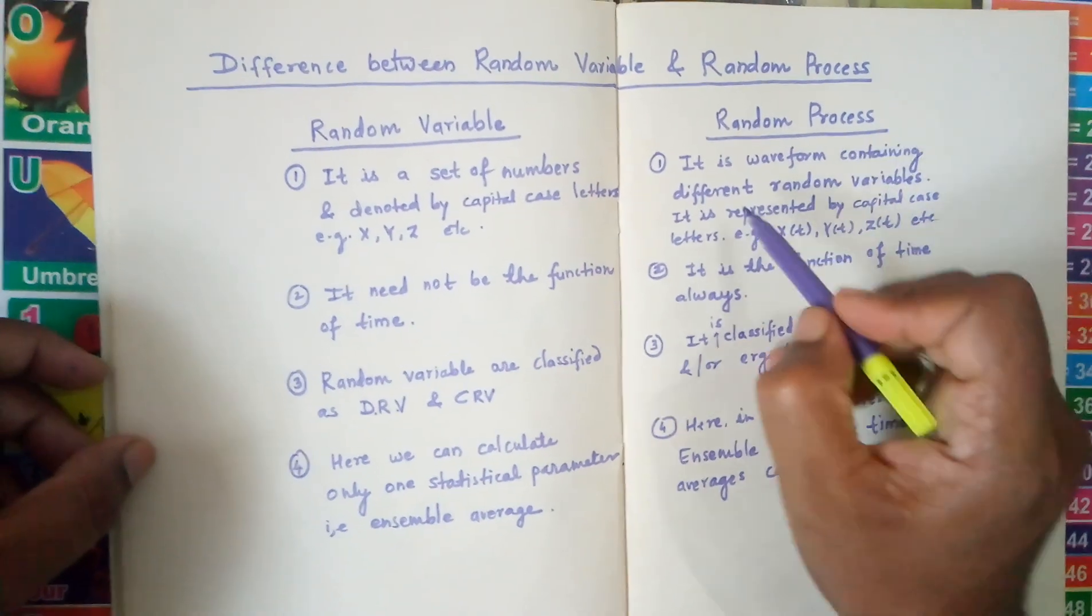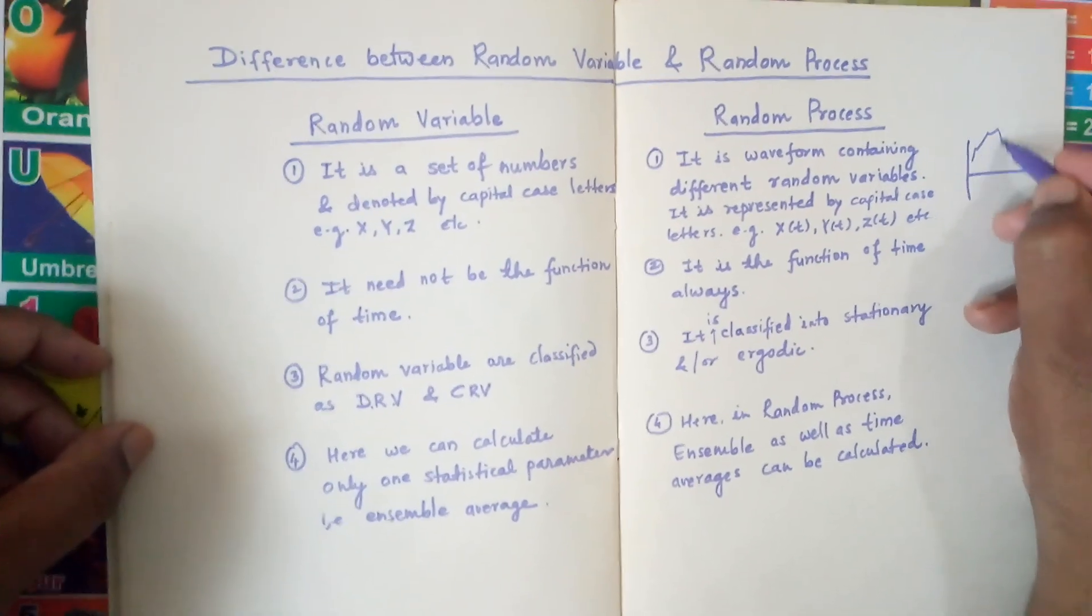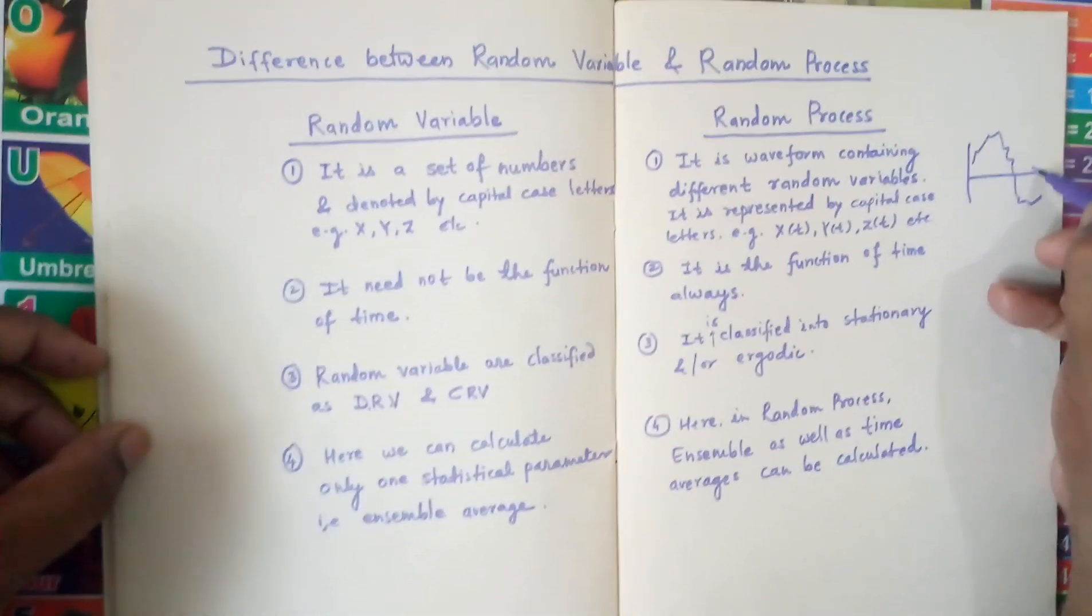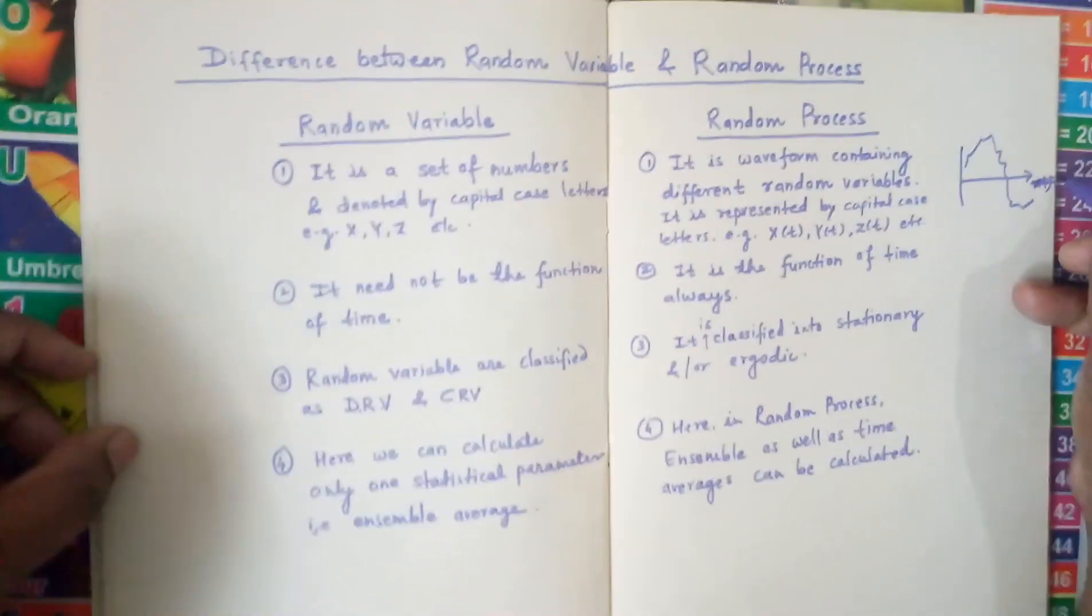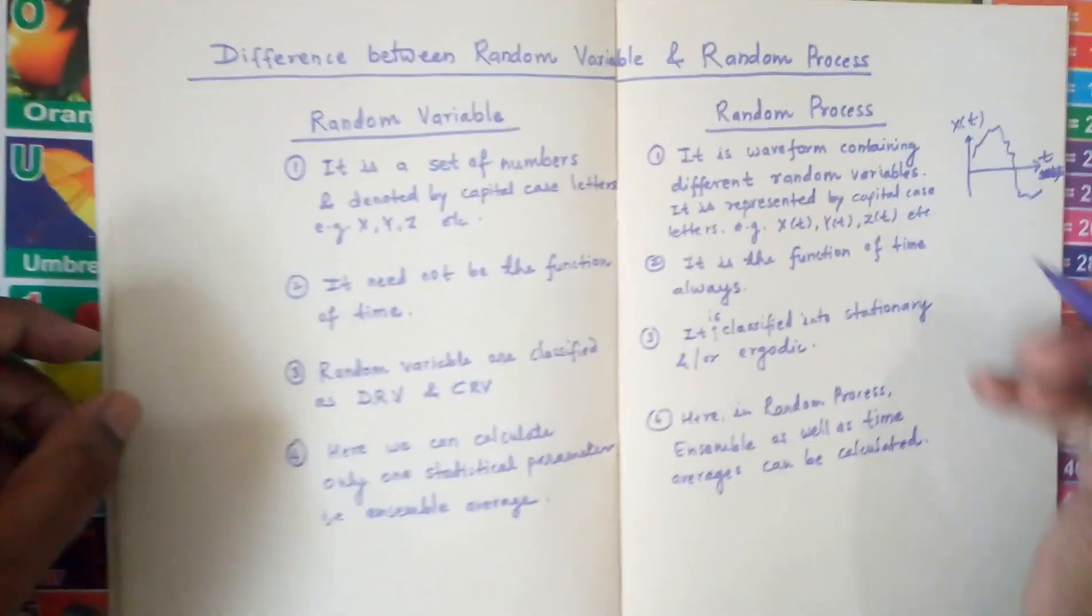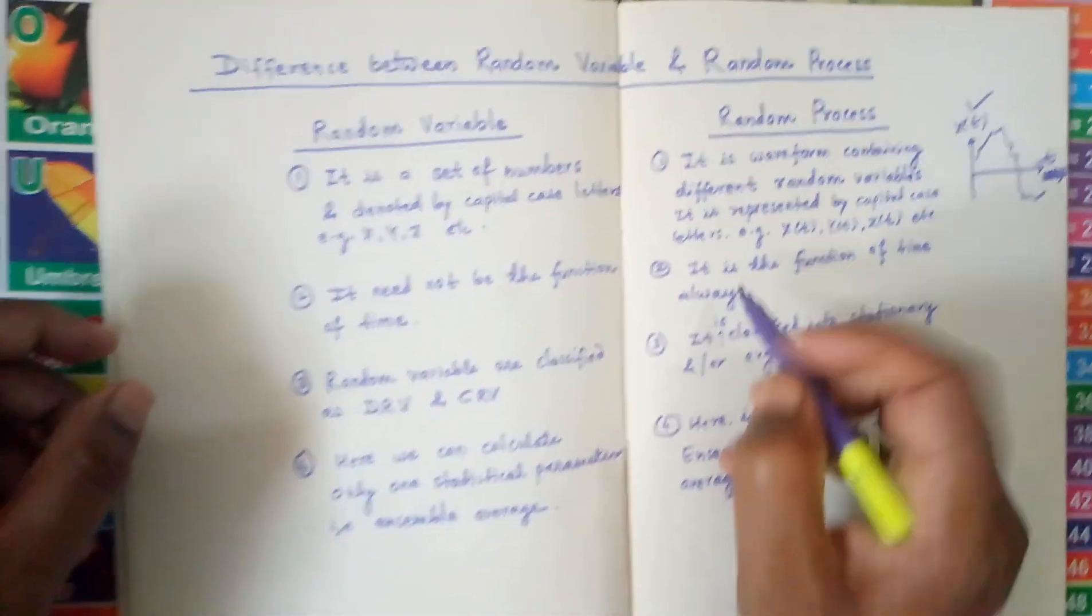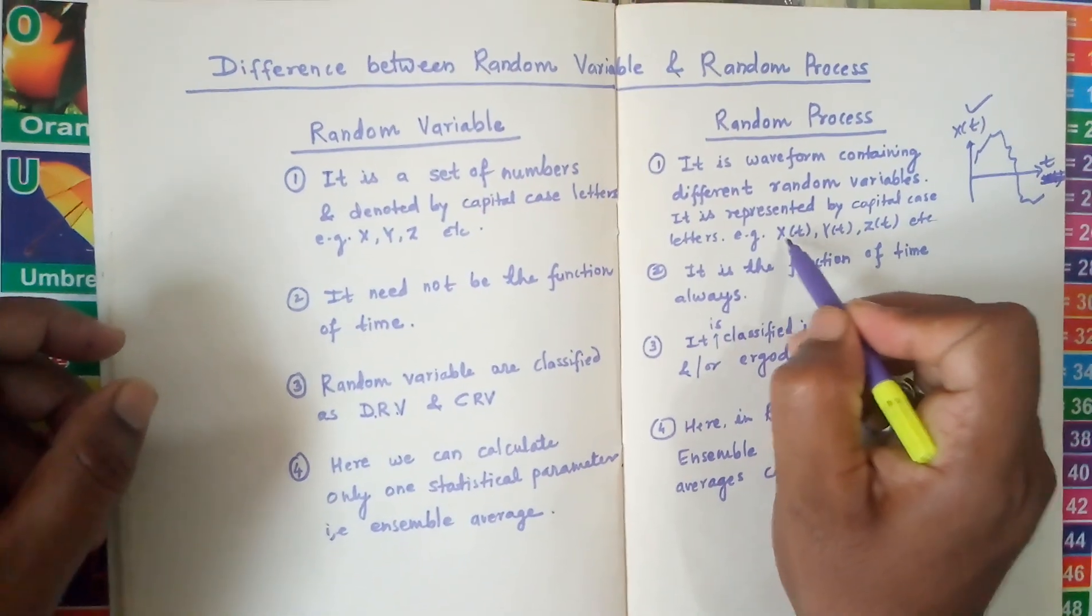Whereas the random process is a waveform, somewhat like this random waveform. This process is represented by X. You can say this is the time axis and this is suppose X. So it is represented by X, Y, Z, and the letter is capital.